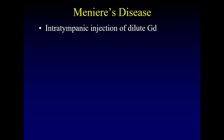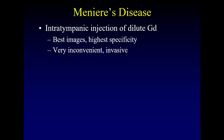One way to do this is to put a needle through the tympanic membrane and inject dilute gadolinium, then wait 24 hours. The perilymph preferentially takes up the gadolinium, and you can see this on 3D FLAIR sequences. These produce beautiful images with very high specificity — you can definitively identify patients with Meniere's disease. However, waiting 24 hours and re-imaging is very inconvenient, and it's an invasive test requiring a needle through the tympanic membrane.